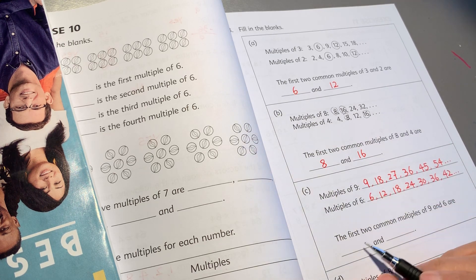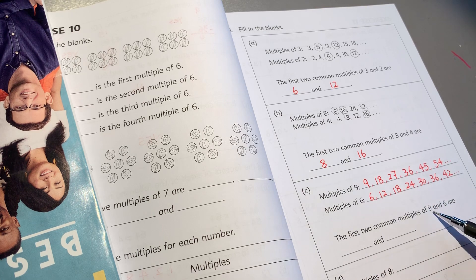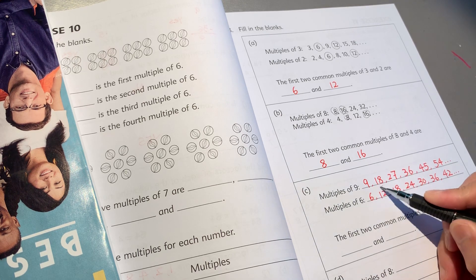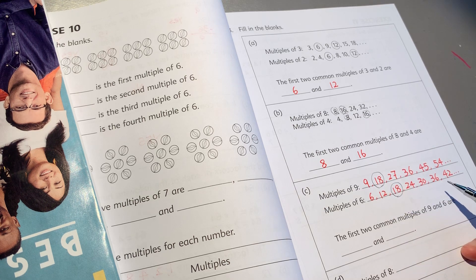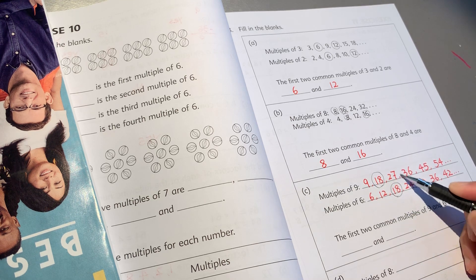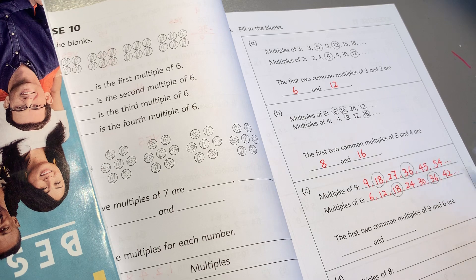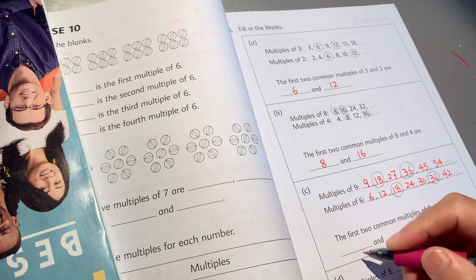And the first two common multiples of 9 and 6, 18, we have 36, we have 18, 36.